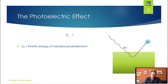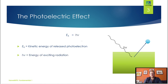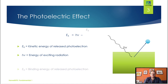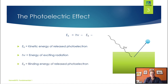What Einstein discovered was that the relationship between the radiation and the matter is as such: when you shine radiation on a sample, you produce photoelectrons, and the resultant kinetic energy of those photoelectrons is equal to the energy of our incoming radiation — the hν you can see in our diagram — minus the binding energy of our electrons inside the atom. So the binding energy is the energy which holds the electron in place.